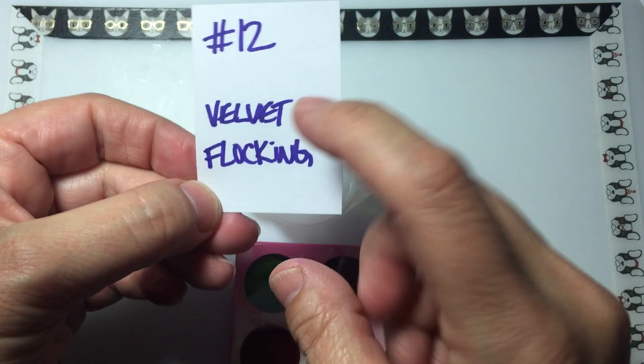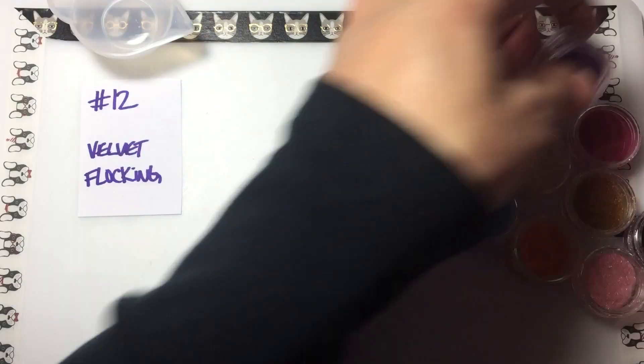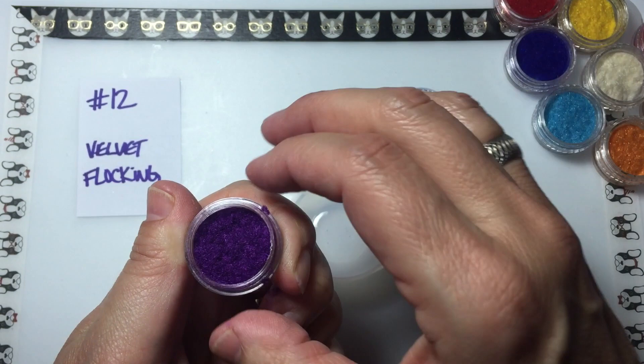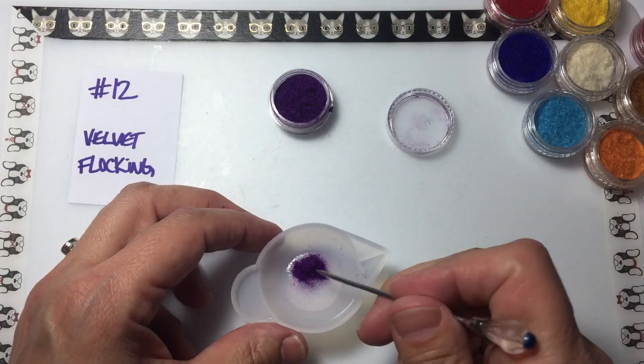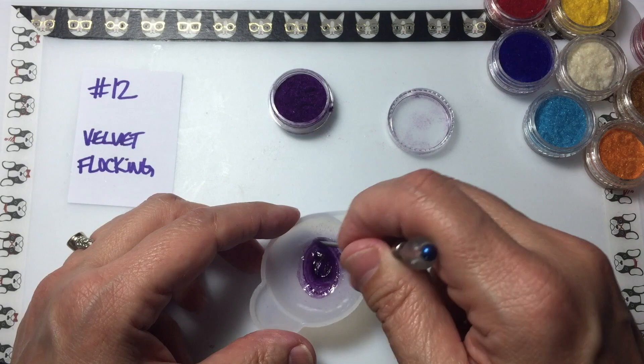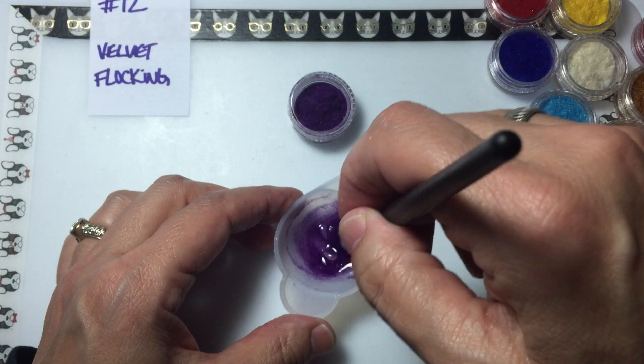The twelfth method to color UV resin is to use velvet flocking. I would recommend fluffing it up before adding it to your resin. The velvet flocking that I used was pretty condensed and compacted and I should have fluffed it off a bit to get a better color out of it, but it does work pretty well and it gives a very opaque coloring.